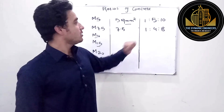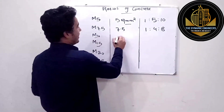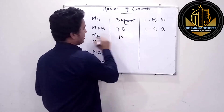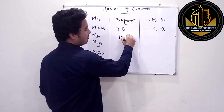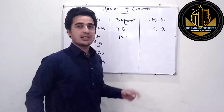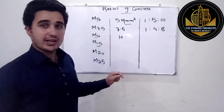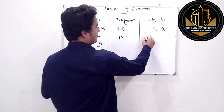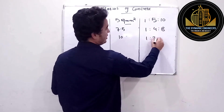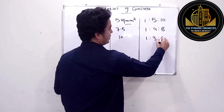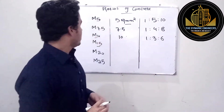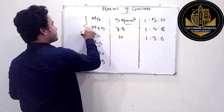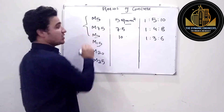The third one is M10, having a strength of 10 megapascal, or 10 Newton per millimeter square. The ratio for this is 1:3:6.